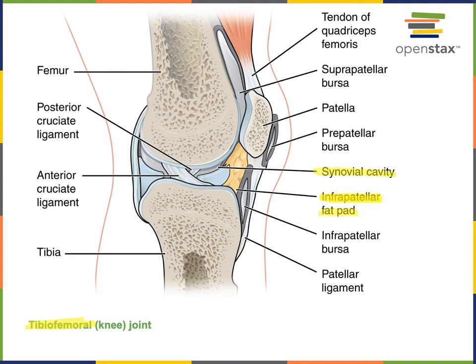Bursa are fluid-filled cushions — essentially small sacs of synovial fluid — that provide further cushioning to a synovial joint. The infrapatellar bursa cushions the tibiofemoral joint just inferior to the patella, and the prepatellar bursa cushions the anterior surface of the patella. Ligaments also stabilize synovial joints; the tibiofemoral joint has both a posterior cruciate ligament and an anterior cruciate ligament located deep within the joint.